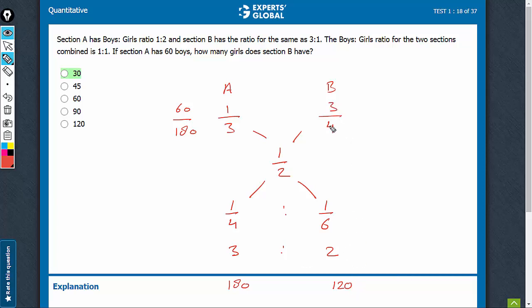Out of these 120, 3 fourths are boys. So, the rest 1 fourth have to be girls. The required answer is 120 times 1 by 4. Turns out to be 30.